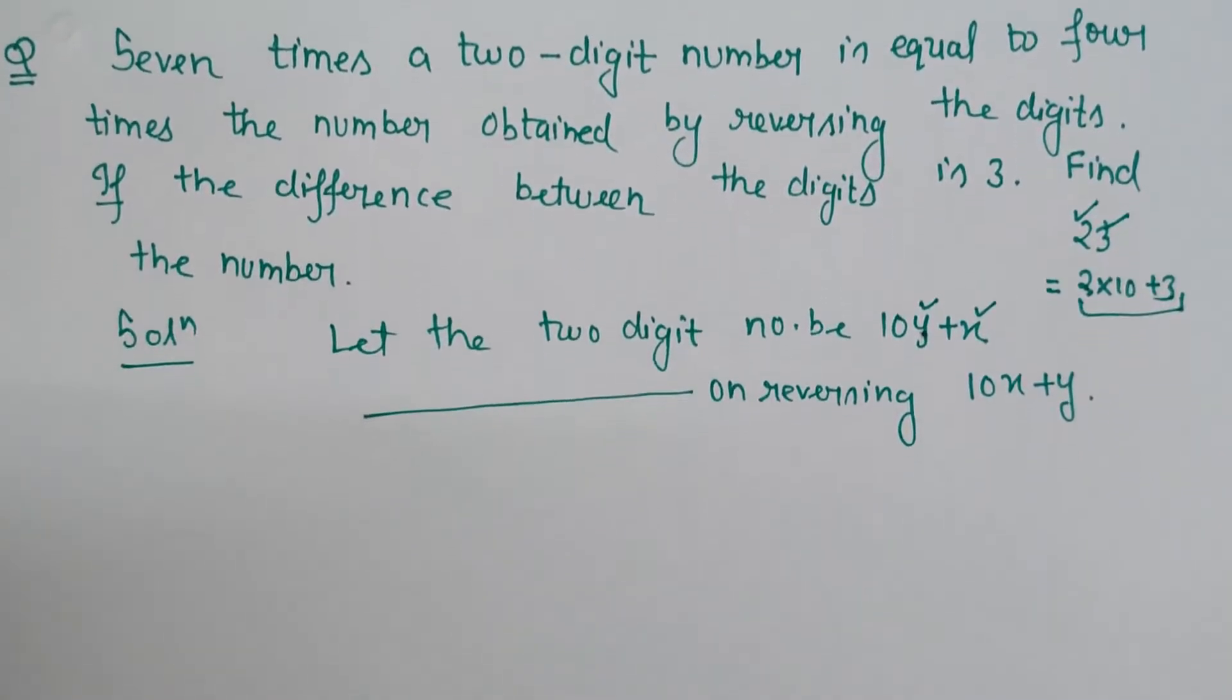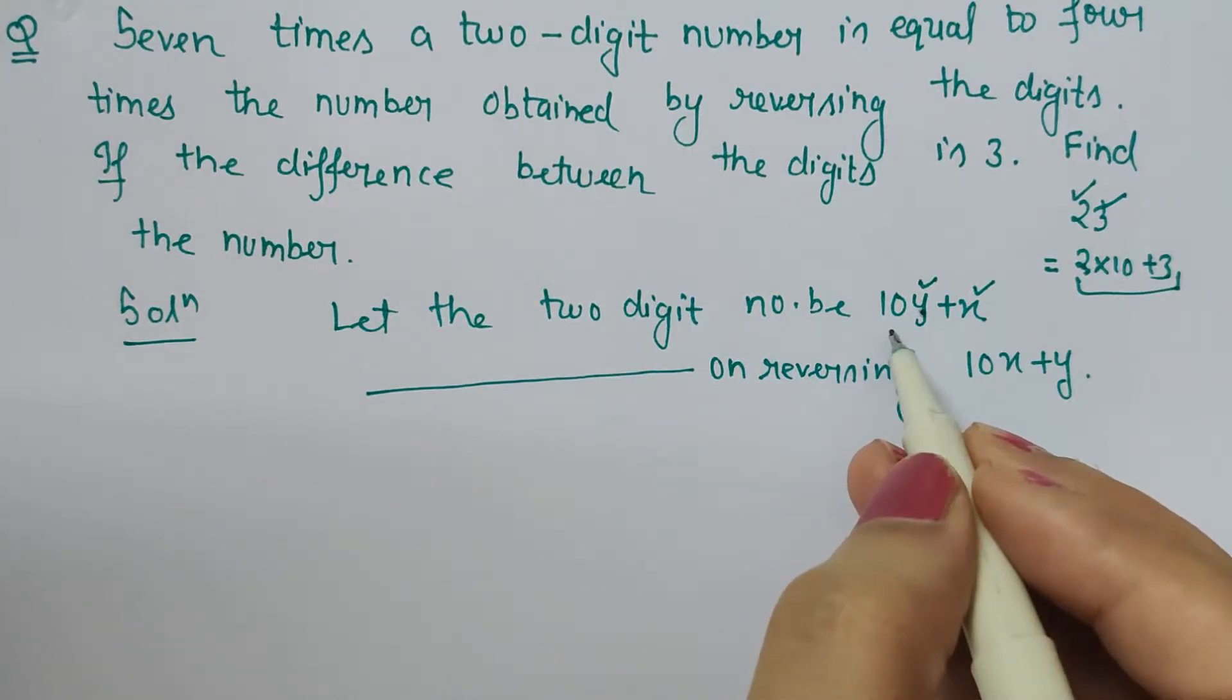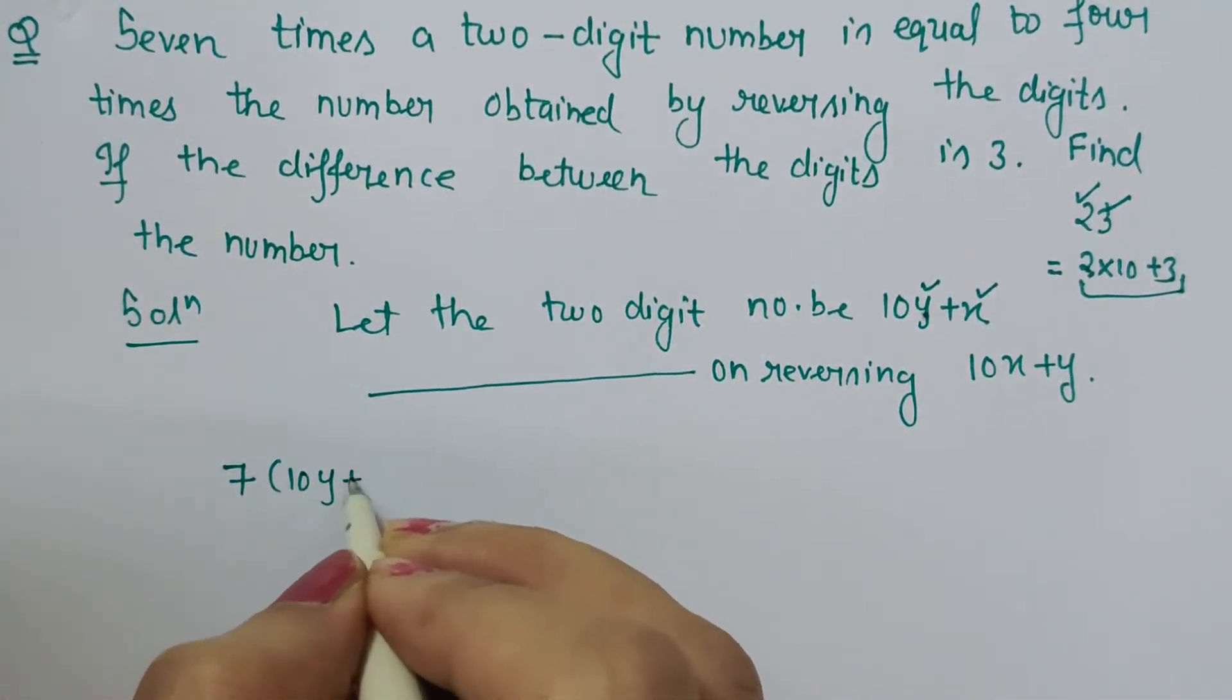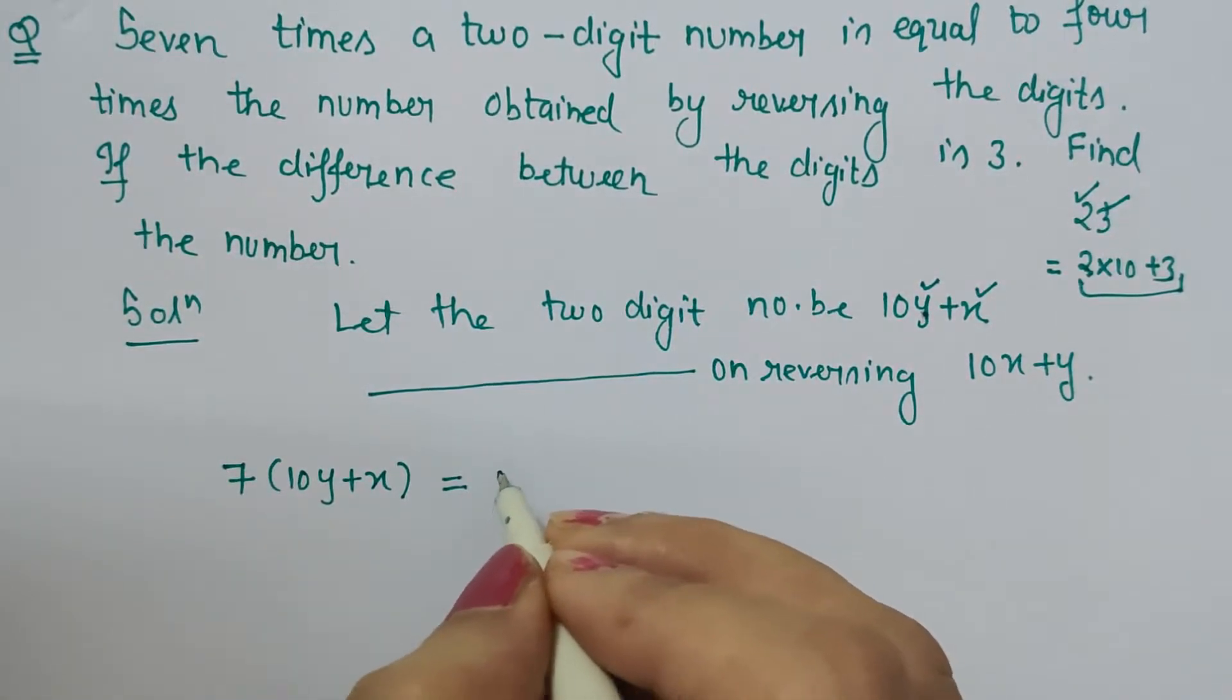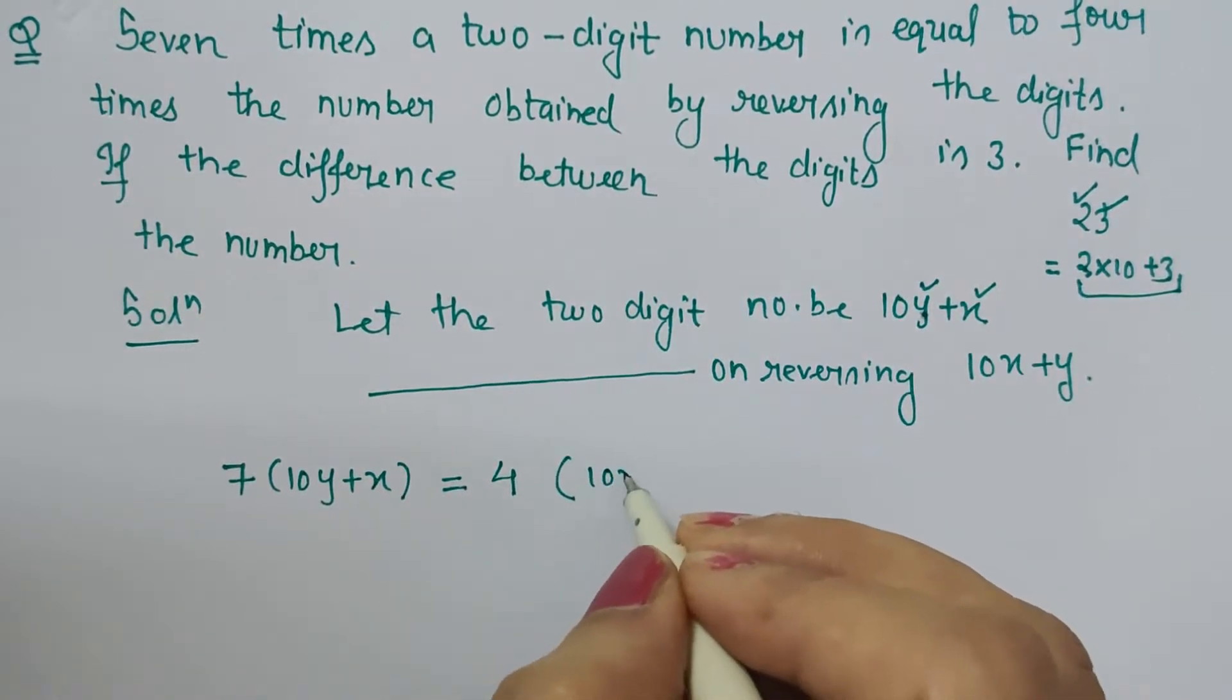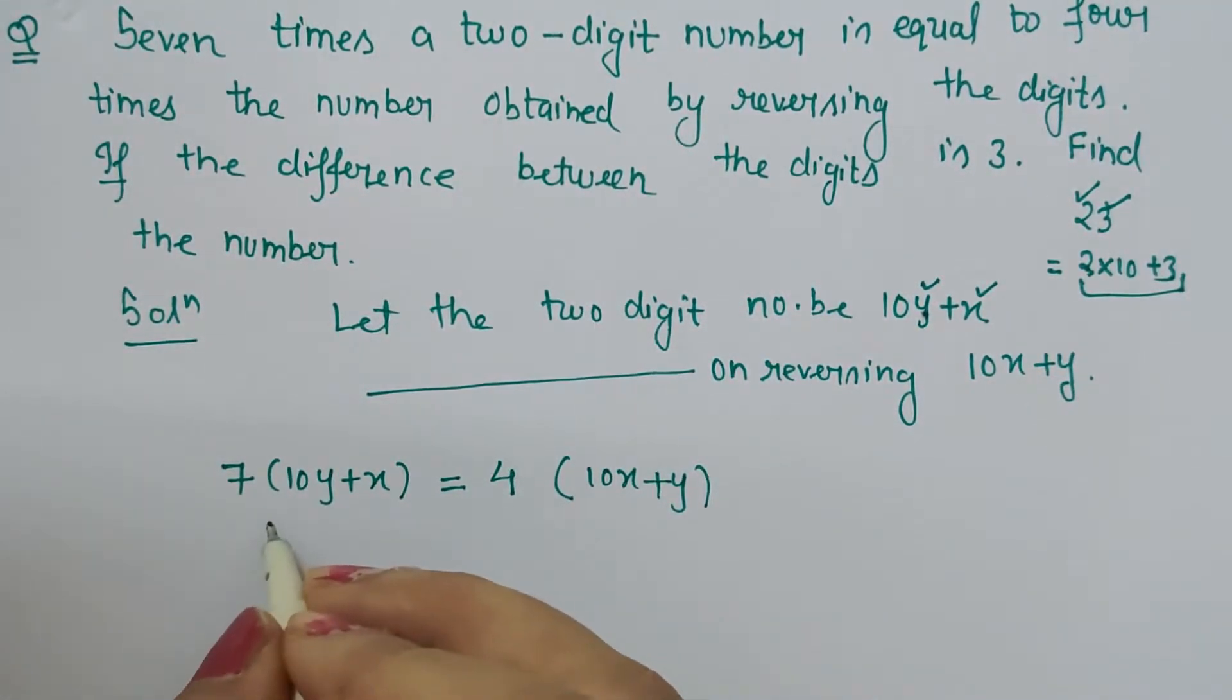Now we have to go as per the question. It says seven times a two-digit number, so two-digit number is 10y plus x. Seven times the two-digit number is equal to four times the number obtained by reversing the digits. So when the digits are reversed we get 10x plus y.